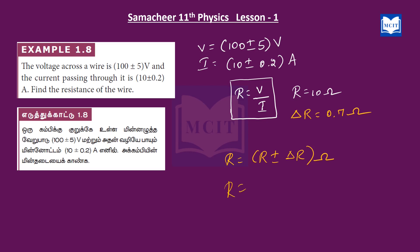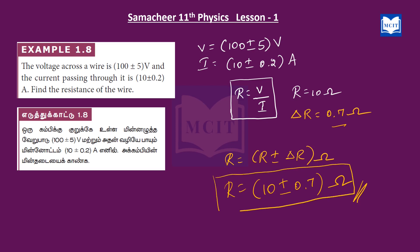So R equals 10 plus or minus 0.7 ohm. Don't forget the unit — ohm. This is a problem on errors in measurement involving a division operation. This is an easy problem — students, if you get this in the exam you can answer it and score full marks. Watch the other videos on the channel. All the very best students, study well and happy learning!